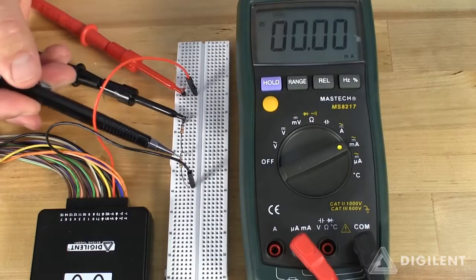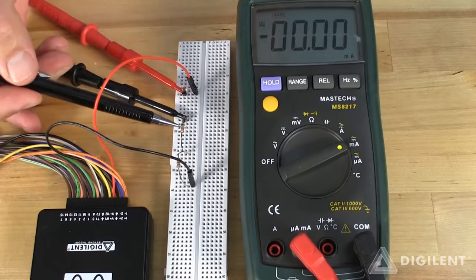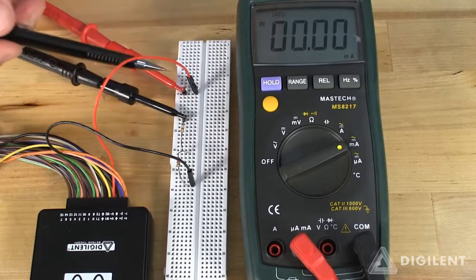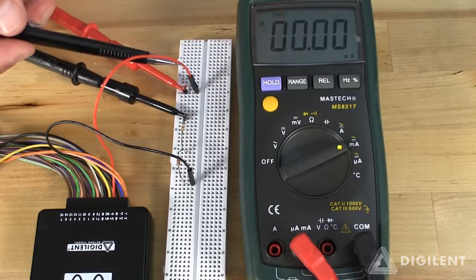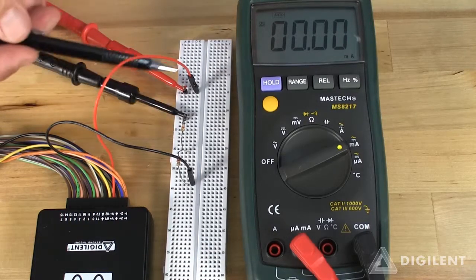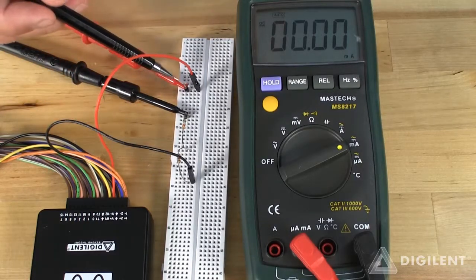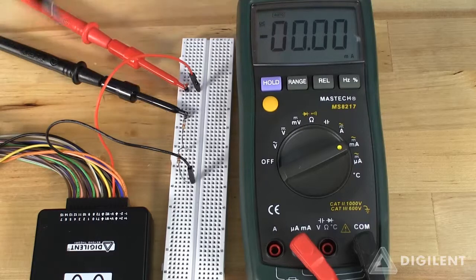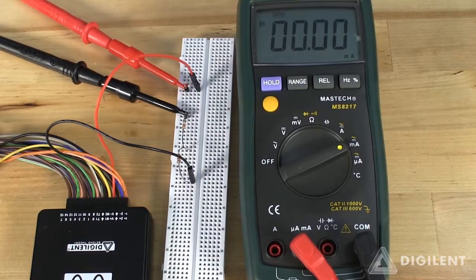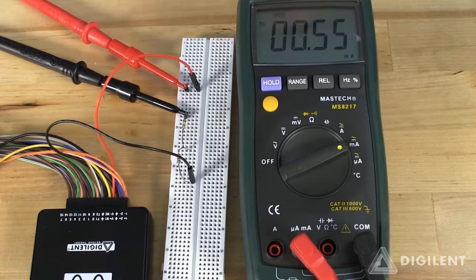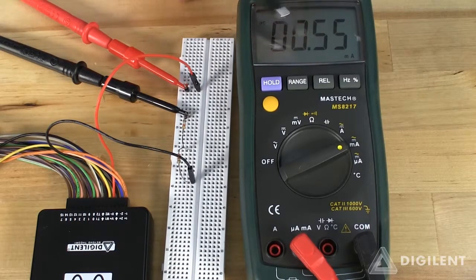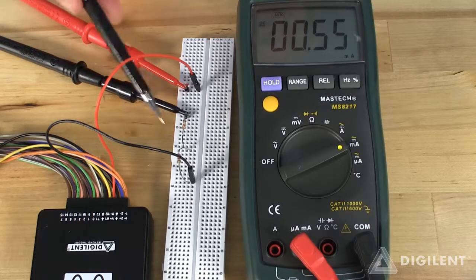Here's our circuit. This is our 2.2 kiloohm resistor. This is our 6.8 kiloohm resistor. We're using V plus on the analog discovery, this red wire, to apply 5 volts across the overall circuit. The DMM is being used to measure the current through the series combination. If I turn on power to the analog discovery, I do get a current of about 0.55 milliamps, so it looks like we're in pretty good shape.